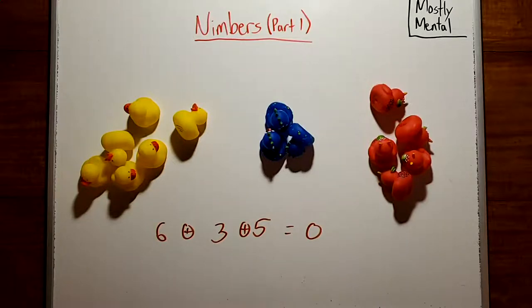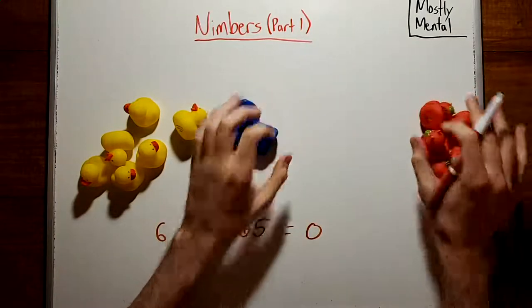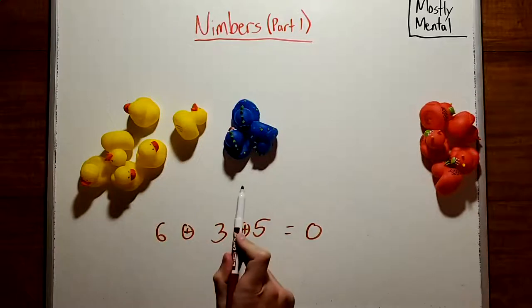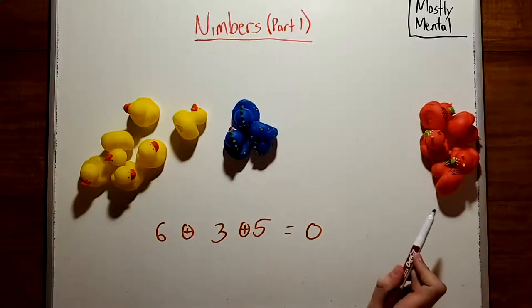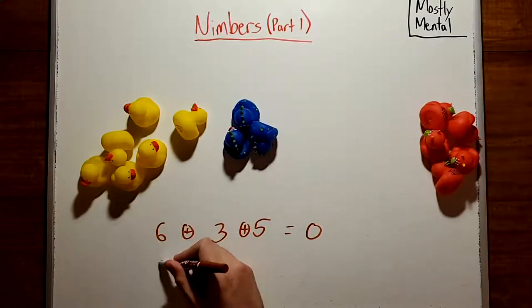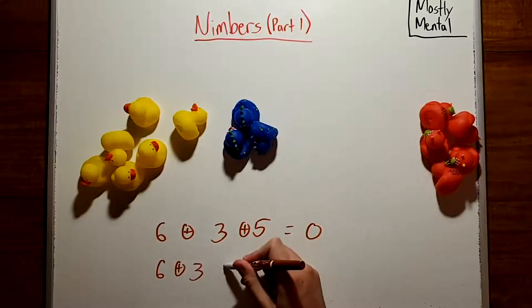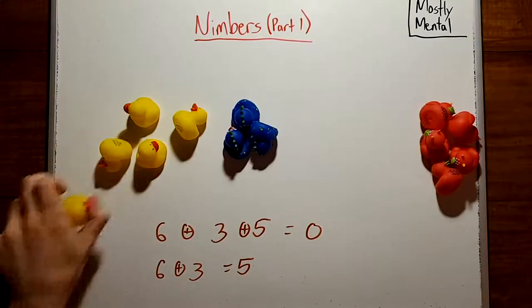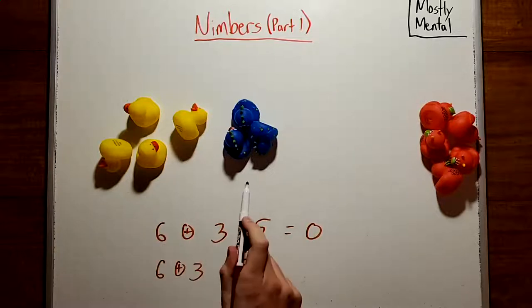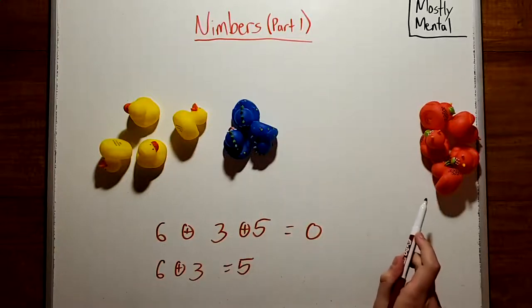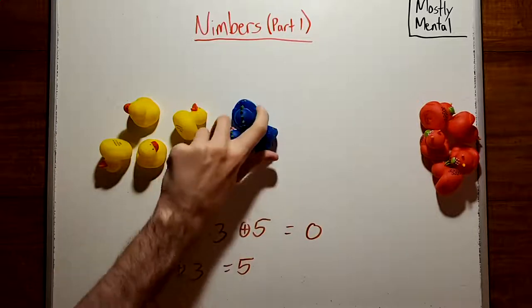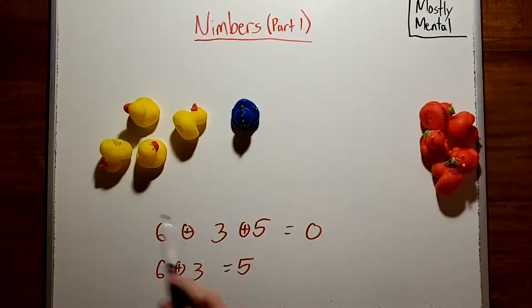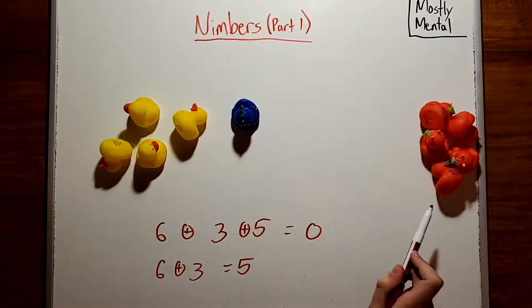Or looking at that another way, we can make the sum of these two piles equal the third. So six plus three equals five. Then whatever move the opponent makes will either change the sum on the left or the pile on the right, and in either case there's some move we can make to undo that and make the sum equal the pile again.